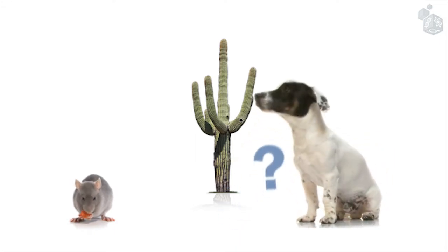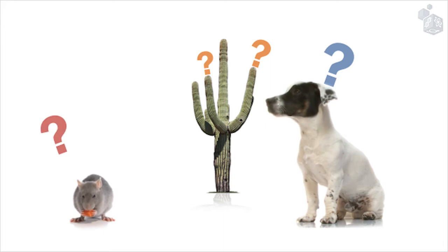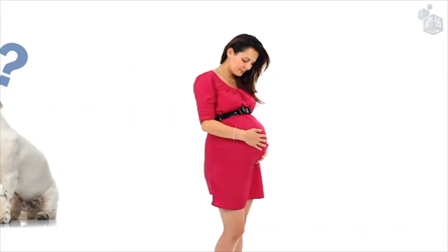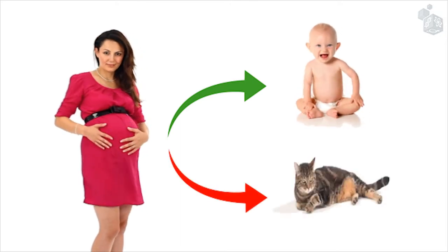So, what causes each of these organisms to have traits that distinguish them from the rest? Why will this woman give birth to a human baby, and not to a cat?